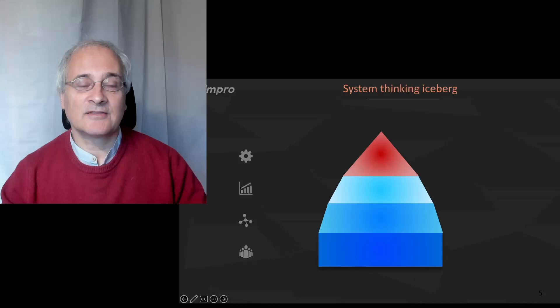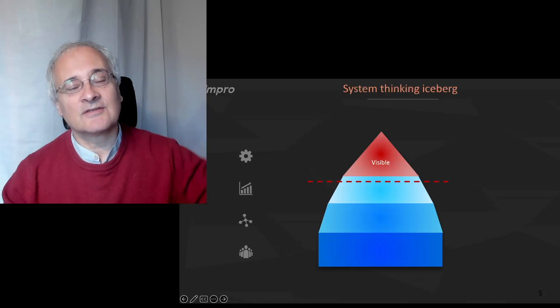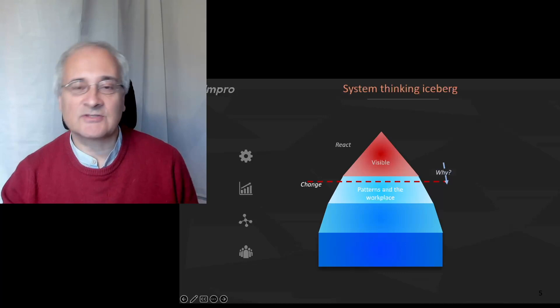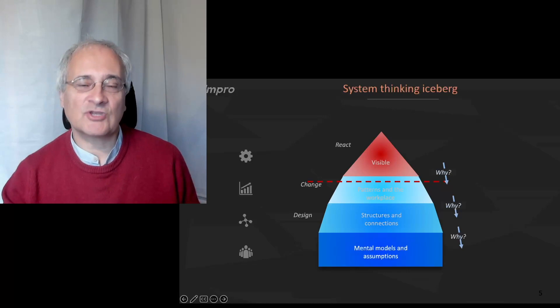The iceberg model roughly speaking is what are those things that are visible in the organisation and how do we analyse beyond what we can see into the patterns in the workplace. We go down and look at the structures and the connections and the way that we've set those up. And then of course we look at the mental models and the assumptions that we have made about the way of working.